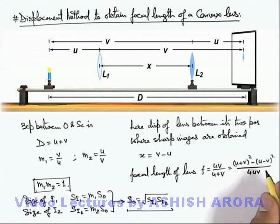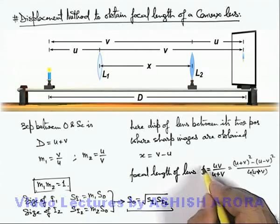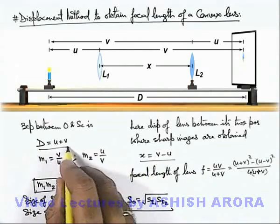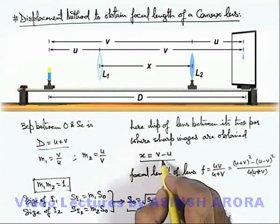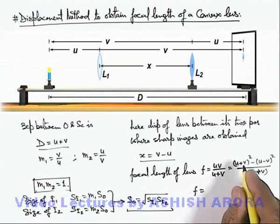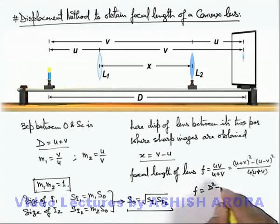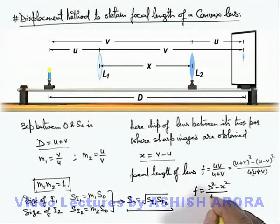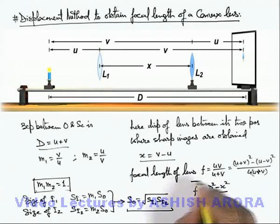That simplification you all know, but this will be 4 times u plus v. Simplification I've done it to express the focal length in terms of x and d, which is the separation between the lens positions and separation between object and screen. So here the focal length can be directly given as d square minus x square by 4 times d. This is the expression using which experimentally we can find out the focal length of the lens.